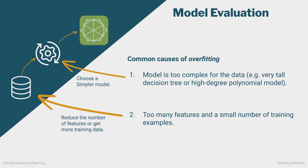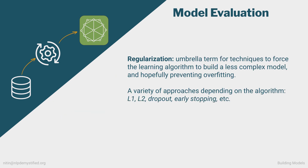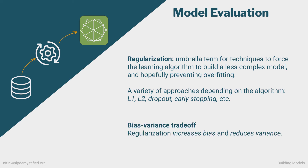Finally, we can also fight overfitting by constraining the model through regularization. Regularization is any technique that forces a learning algorithm to build a less complex model and hopefully prevent overfitting. There are a variety of regularization techniques depending on the learning algorithm — L1 and L2 regularization are common in both classical models and neural networks. With decision trees, we can control the maximum height of the tree generated. There are also neural network specific techniques such as dropout, and we'll cover a subset of them in this course. The important thing to know is that there's a trade-off involved — often adding regularization will increase our model's bias but also reduce its variance. That is, the model won't do as well in training, but it will generalize better when used on the validation and test sets.